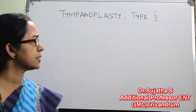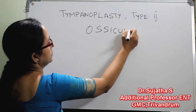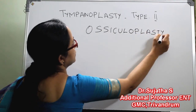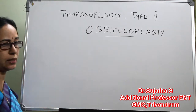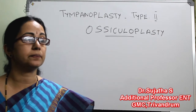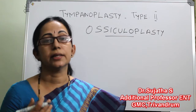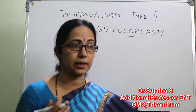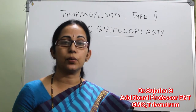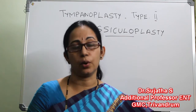Type 2 tympanoplasty is called ossiculoplasty. In this class I will describe the indications and contraindications of ossiculoplasty, the types of ossiculoplasty as classified by Austin, and also the types of graft materials used with advantages and disadvantages of each type of graft, the postoperative care, and also the complications.